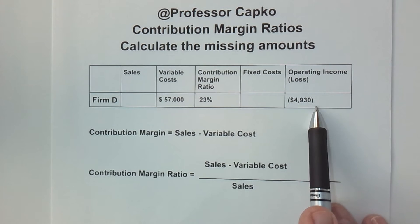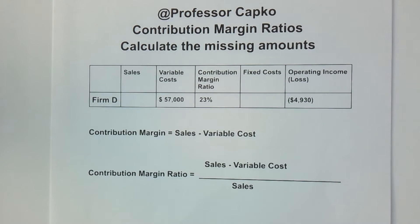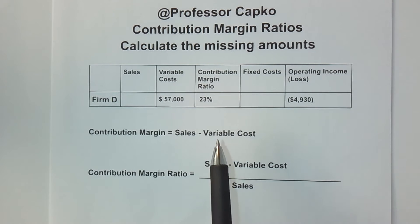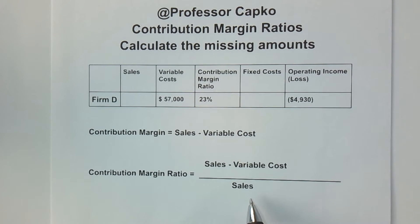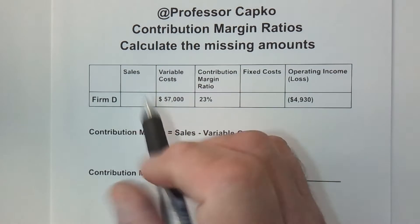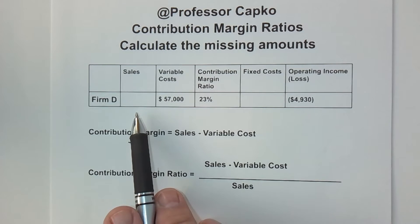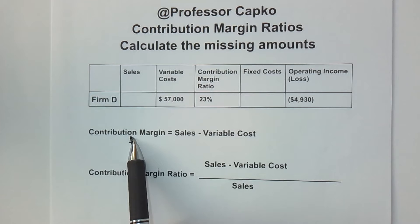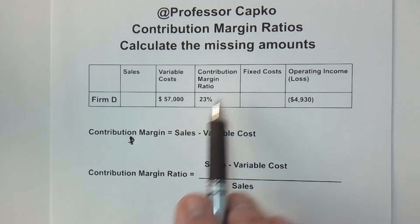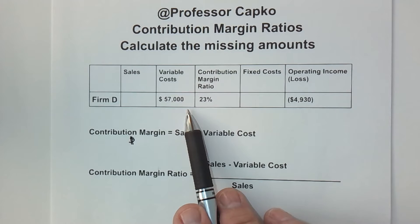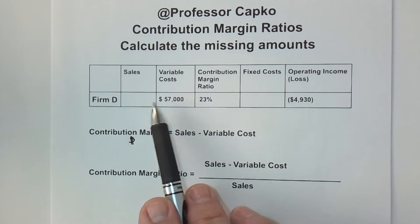Remember, when it's in parentheses like this in accounting, that means it's a negative number, so this company is losing money in this situation. We've got a couple of formulas here that are going to be helpful. Contribution margin is equal to sales minus variable costs. Contribution margin ratio is equal to sales minus variable costs, all over sales. Contribution margin is going to be in dollars — it's the amount from sales after variable costs are taken care of that goes toward your operating income, looking at aggregate sales, aggregate fixed costs, and aggregate variable costs.